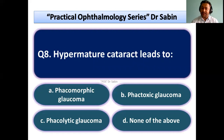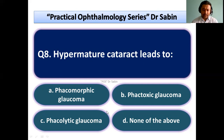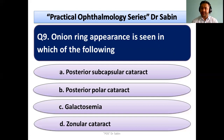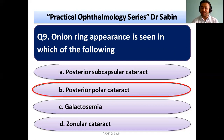Hypermature cataract leads to — hypermature cataracts lead to lens-induced glaucoma, but the type is secondary open angle glaucoma, because of lens protein that comes out from the capsule causing glaucoma. The answer is phacol ytic glaucoma. Phacomorphic glaucoma is caused by an intumescent lens. Onion ring appearance is seen in posterior polar cataract, where a central posterior block-like structure is seen in the posterior capsule.